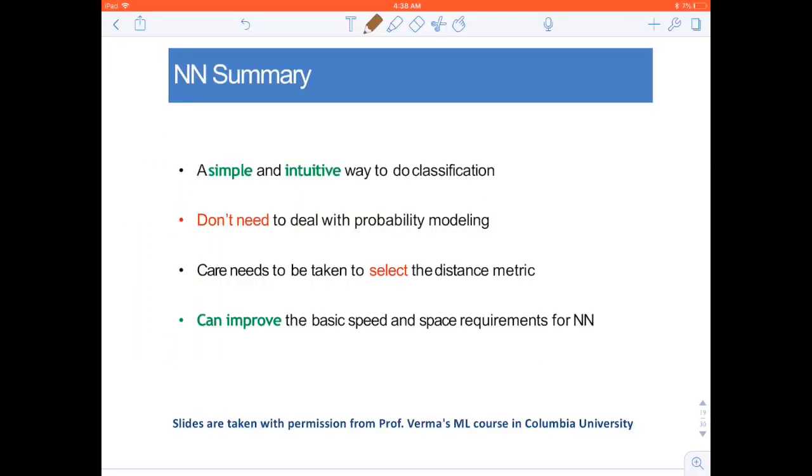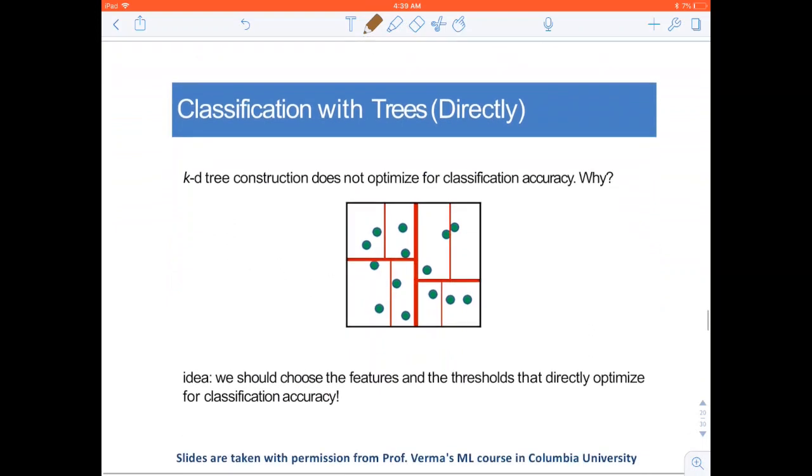In summary, nearest neighbor is very simple and intuitive. It's a discriminative approach, so no dealing with probabilities, though we need to be careful when we are selecting the distance metric. And we already saw how we can improve the basic speed and space requirements for the nearest neighbor.